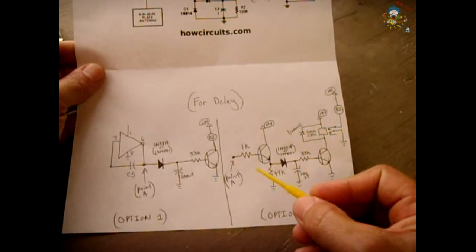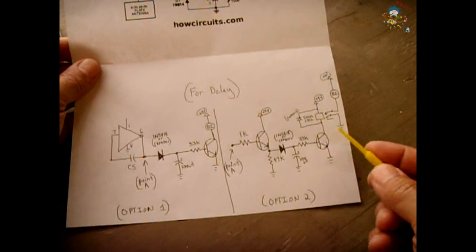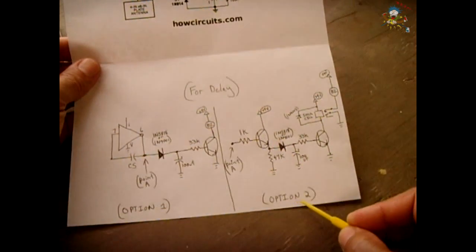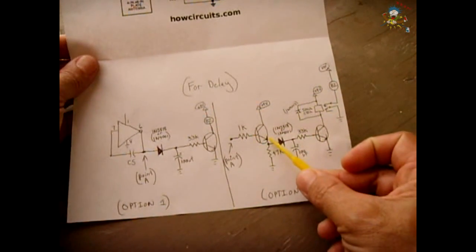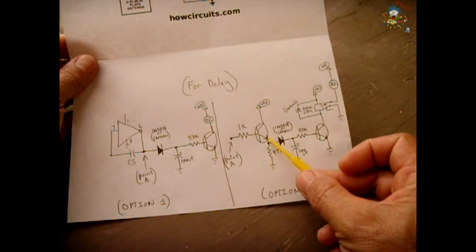What I did is I actually had the circuit assembled already, and it was just a beep, and I added on to it. So I did option 2 right here. The emitter, instead of going directly to ground, I put a 47k resistor.